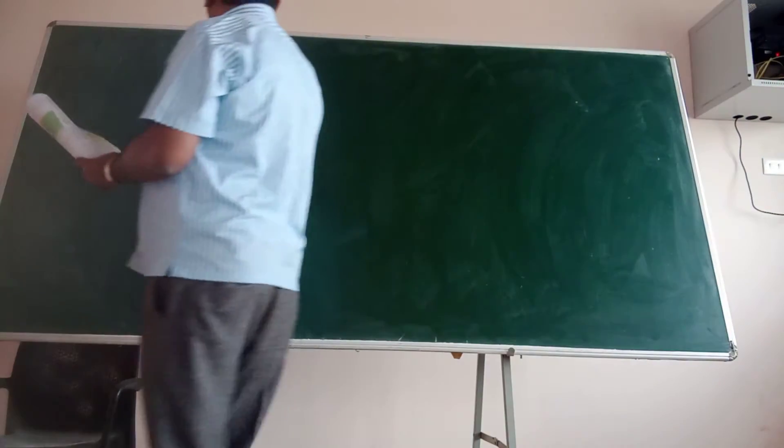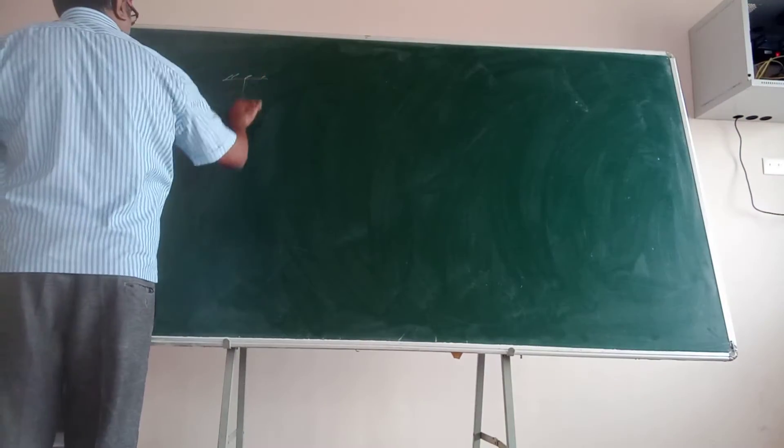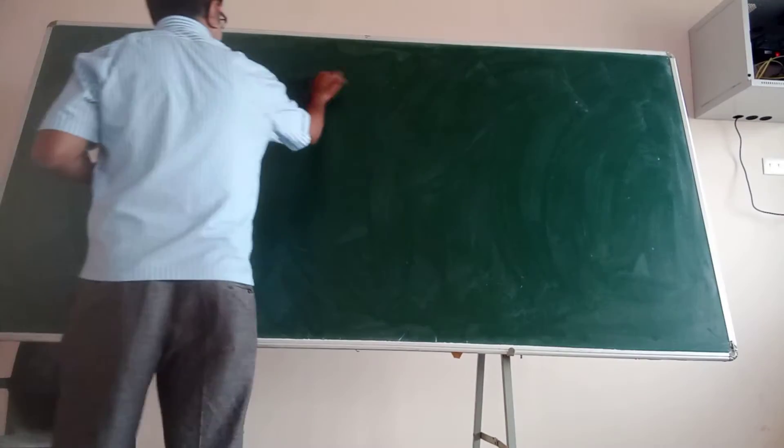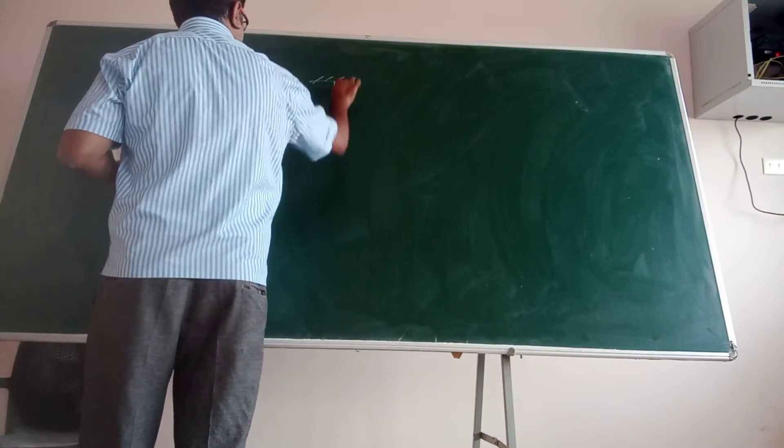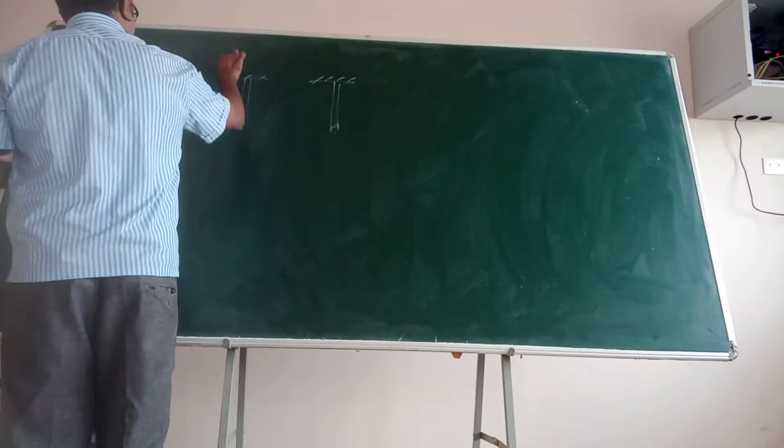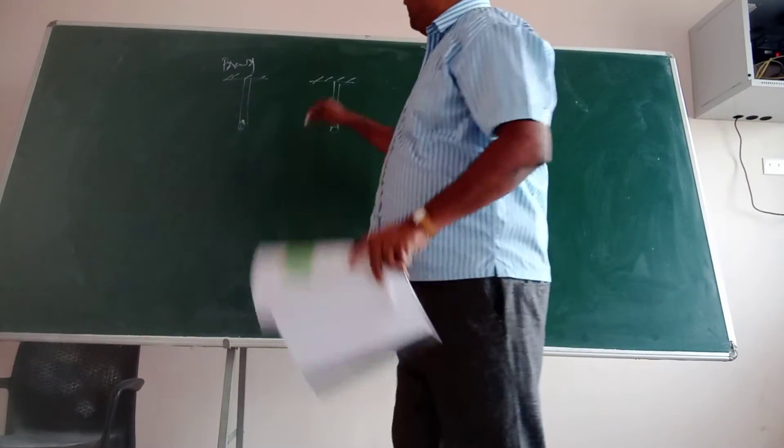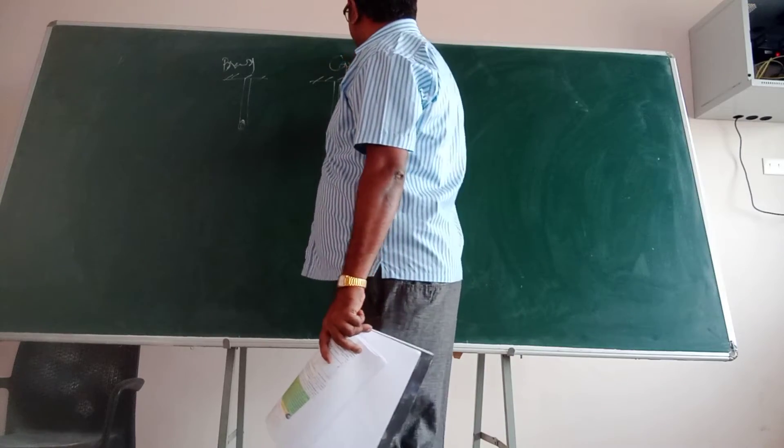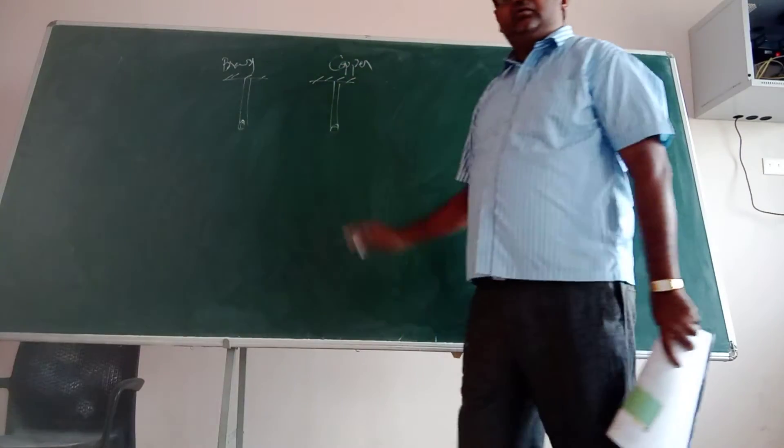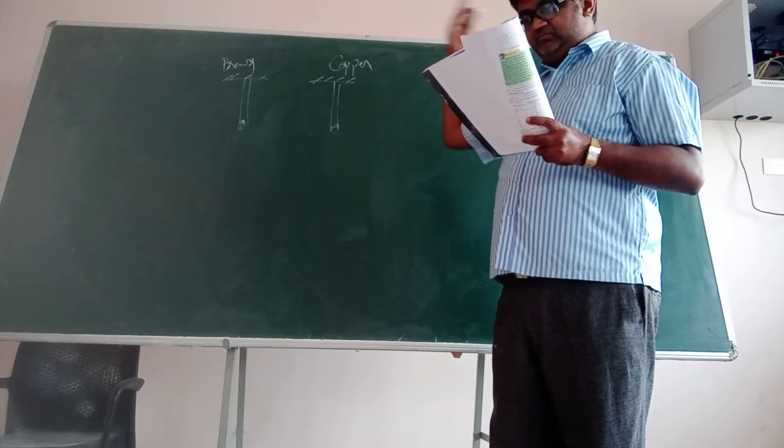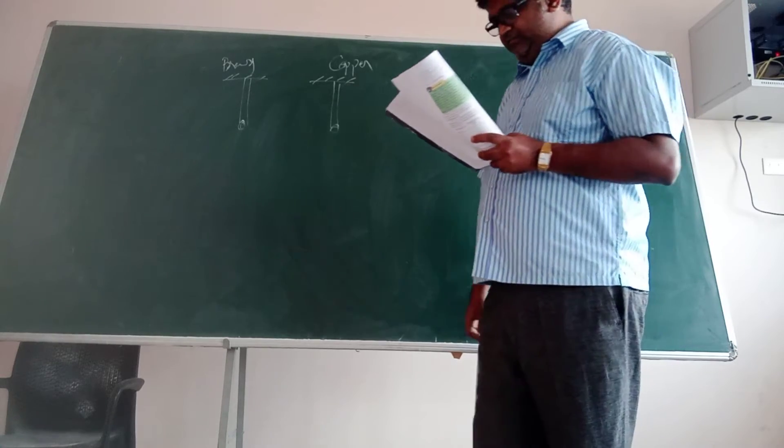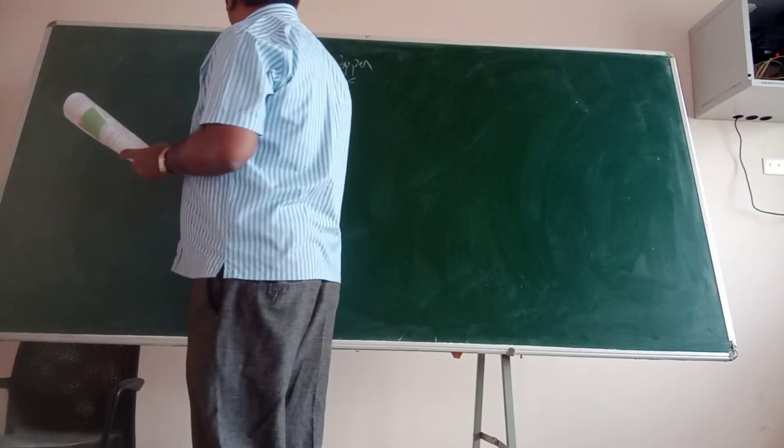Alright, so you have got a brass wire and an iron wire. This is brass. What is the other? Copper. Alright. Both are hanging from some ceiling. And brass wire length is 4.5 meters.